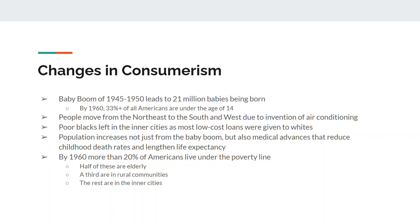People move from the Northeast to the South and from the Northeast to the West because air conditioning makes both of those regions more comfortable. Now, all the people leaving the inner cities and going to suburbia — that's mostly a white movement. African Americans are going to be left in the inner cities mostly because they can't afford to move. They don't have the jobs, the income equality, or even qualify for the loans. So poor blacks are left mostly in the inner city while white flight occurs in the suburbs.